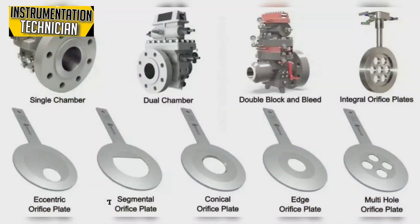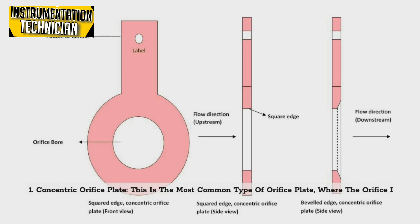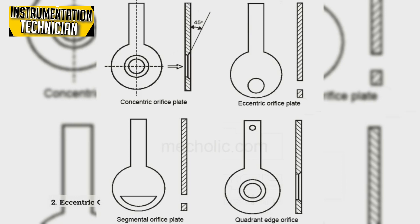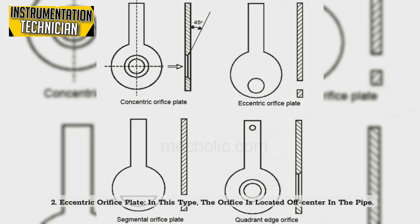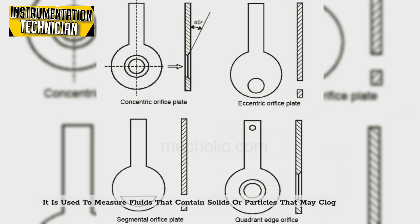There are different types of orifice plates, including: 1. Concentric orifice plate — this is the most common type, where the orifice is placed concentrically in the pipe. 2. Eccentric orifice plate — in this type, the orifice is located off-center in the pipe. It is used to measure fluids that contain solids or particles that may clog the orifice.